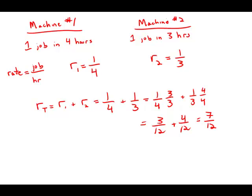If we're working at a rate of seven-twelfths, what is the time required to complete one job? X is the unknown time to complete one job. We'll cross multiply. We get seven X equals twelve.